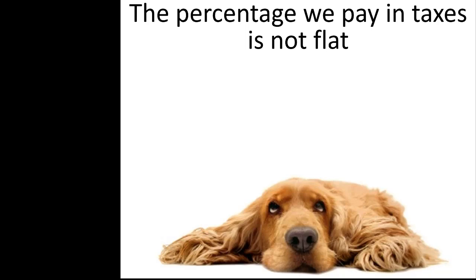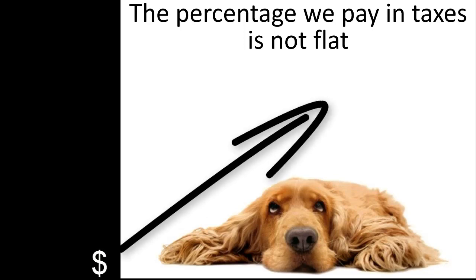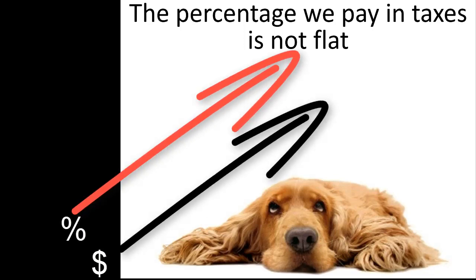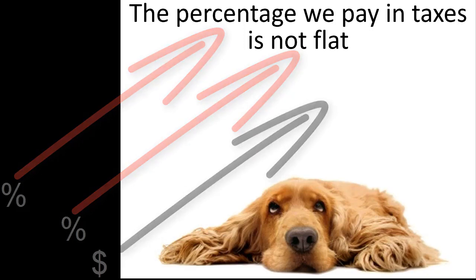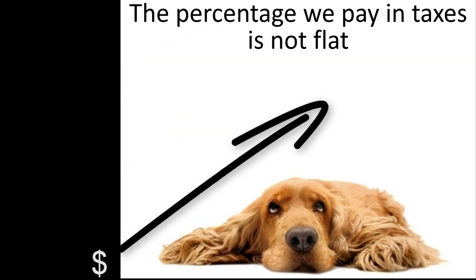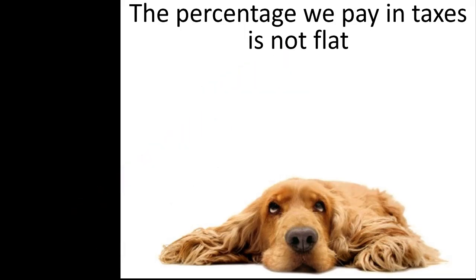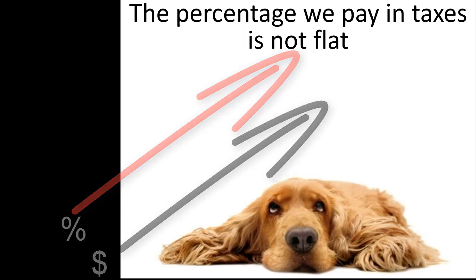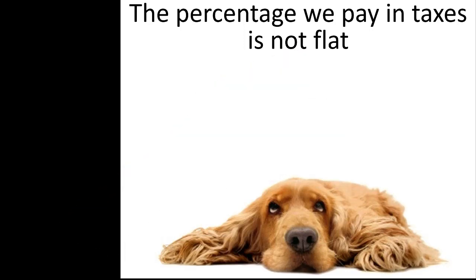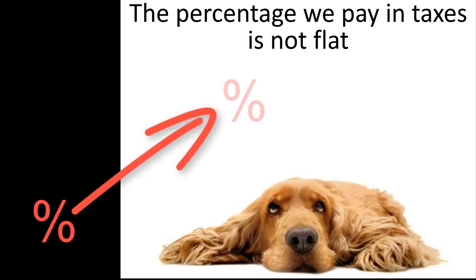A consistent feature of the federal tax systems is that the tax rates are not flat. As income increases, the income tax rate increases, and the capital gains tax rate increases. As estate size increases, the estate tax rate increases. As total non-charitable gift size increases, the gift tax rate increases. These increasing tax rates mean that the tax effects from the same transaction may vary dramatically from person to person.